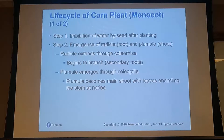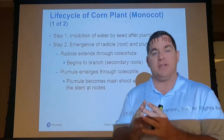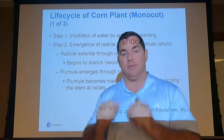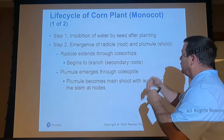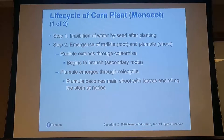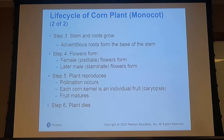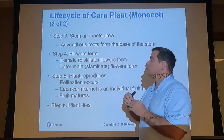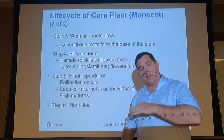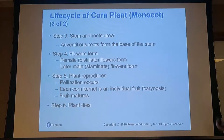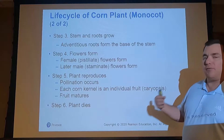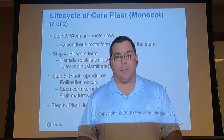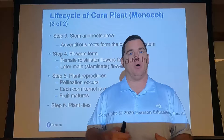Next, the plumule will emerge through the coleoptile, which contains all the genetic material necessary to form the leaves. So we have the radicle as the root and the plumule as the shoot. Both stems and roots will then grow — roots going down, stems going up — and eventually flowers will form, both female and male.